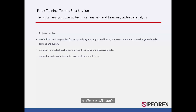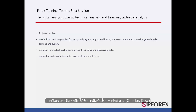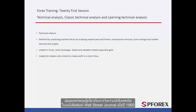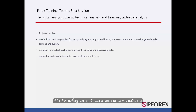Technical analysis is categorised into two groups: classical and modern analysis. Classical technical analysis has been established by Charles Doe, who published his theory about technical analysis in the Wall Street Journal newspaper in 1900, on the basis of price change and fluctuation.